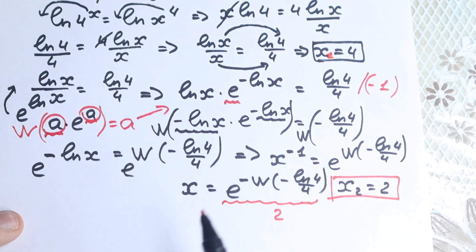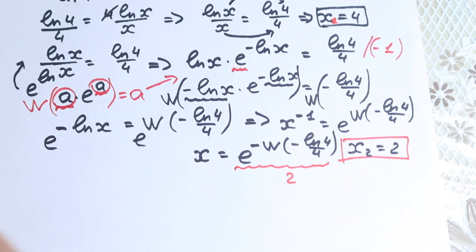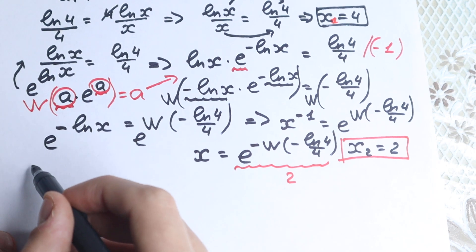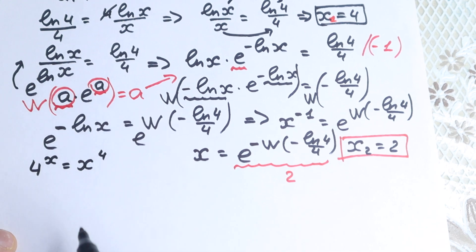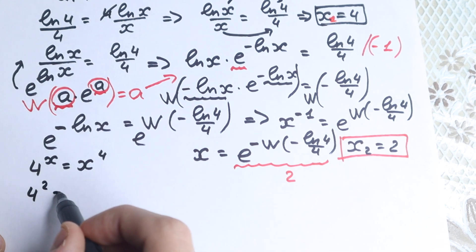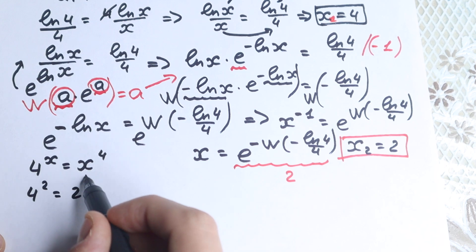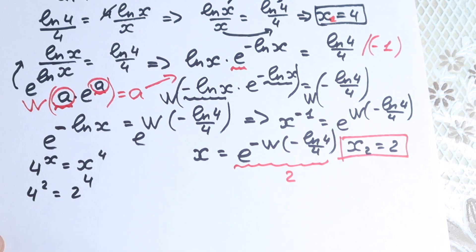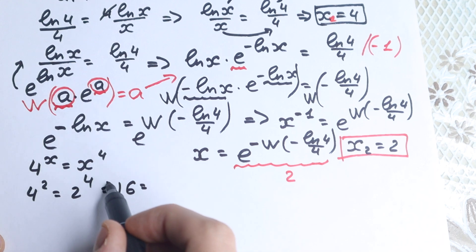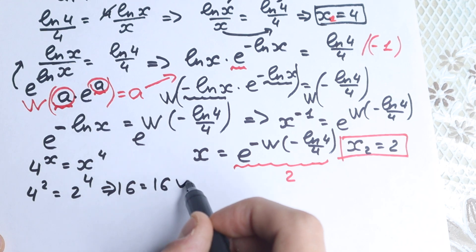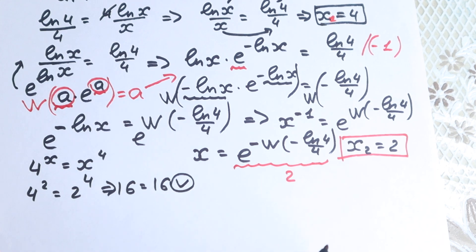Let's verify x equals 2. Substituting into 4^x = x^4 gives 4^2 equal to 2^4, which is 16 equal to 16 — absolutely correct. However, this is only our second root; we still need to check for a third or fourth root.